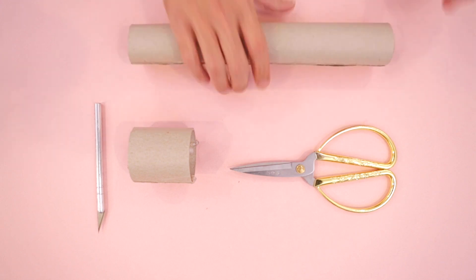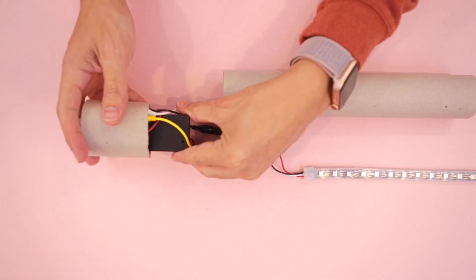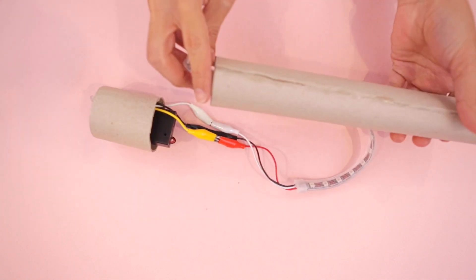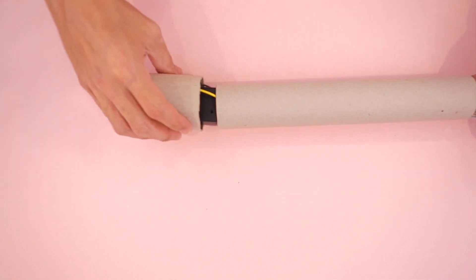To make the handle and pommel use paper towel rolls or make your own with cereal boxes. The battery pack and circuit board are press fitted into the tube. The LED strip wiring can go through the handle.